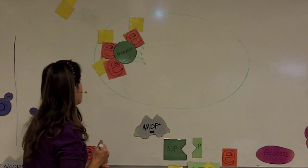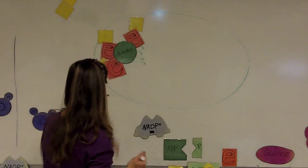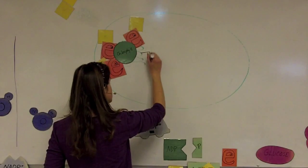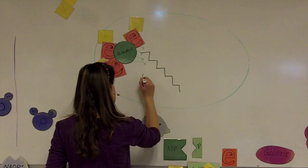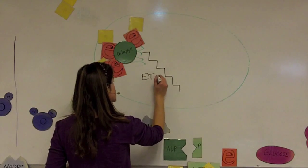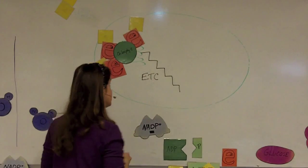So the first way that the cell captures that energy from these excited electrons is that it puts the electrons through a process that I'm going to show in this little staircase. It's called the electron transport chain, or the ETC.